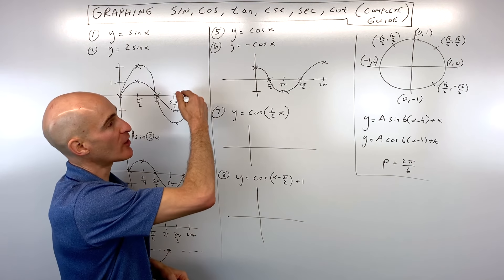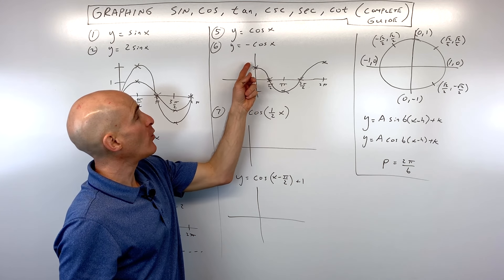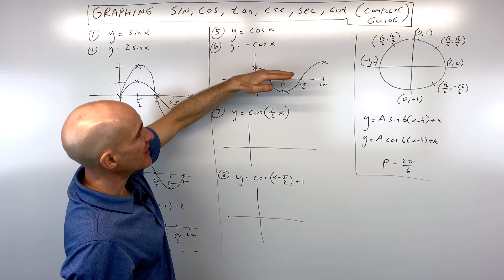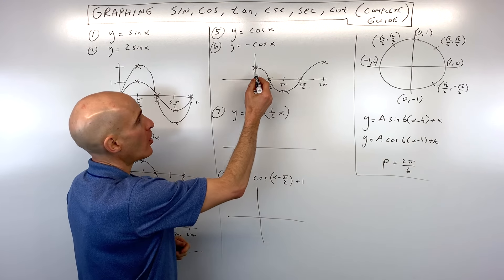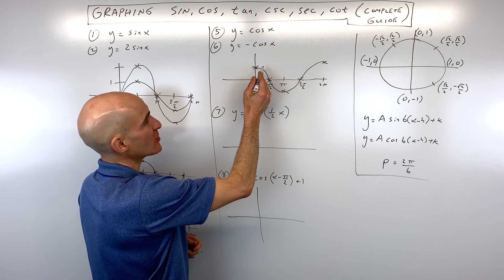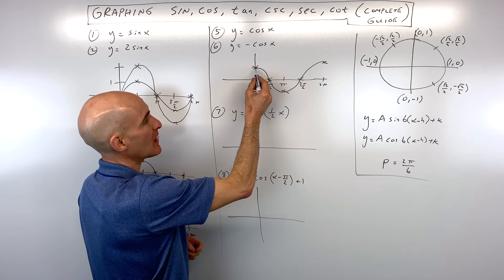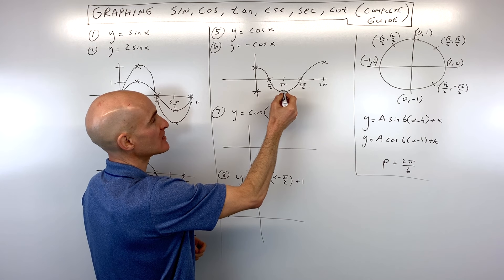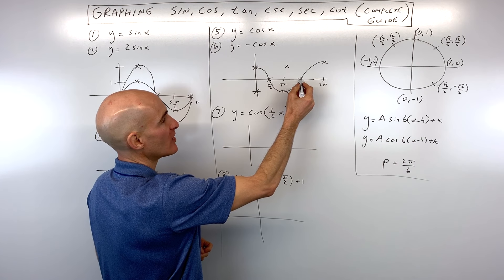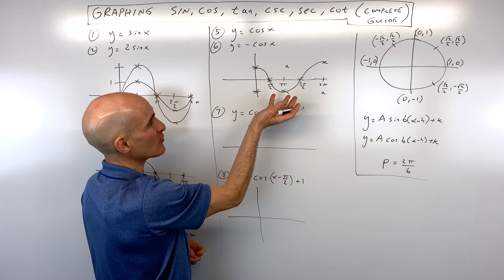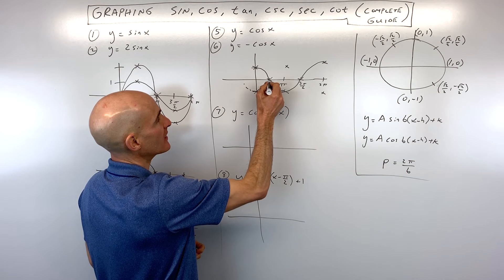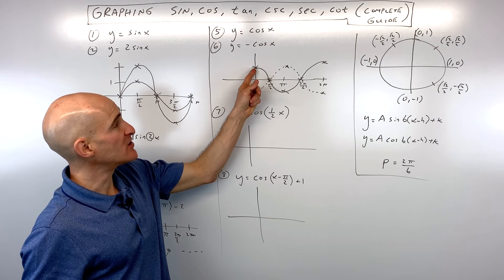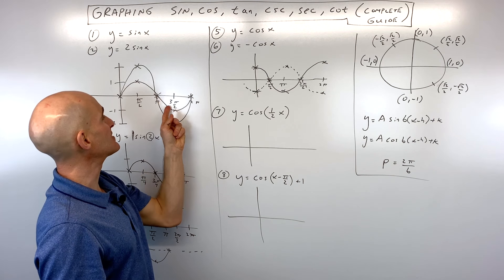These are called sinusoidal graphs — they have that S shape. Now what would the graph look like if you had y equals negative cosine of x? The negative reflects the graph over the x-axis. All the y values are going to be the opposite: instead of being at one you're going to be at negative one, negative one becomes positive one, and so on. So this graph is just been flipped. You want to memorize the basic shapes — cosine has that basic shape starting at the max, and sine has its basic shape starting at the midline.